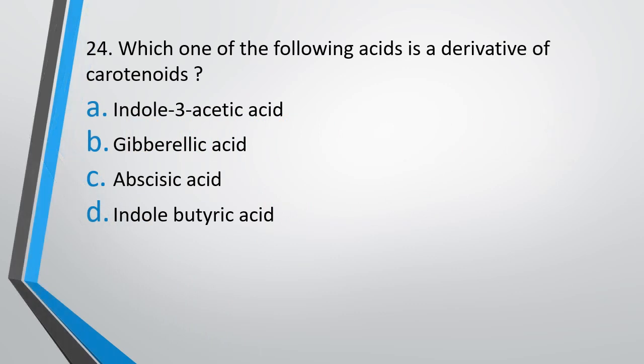Question No. 24: Which one of the following acids is a derivative of carotenoid? Indole-3-acetic acid, gibberellic acid, abscisic acid, or indole-butyric acid? The correct answer is option C — abscisic acid is a derivative of carotenoids.